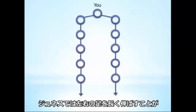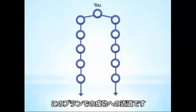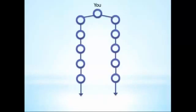It may seem complicated, but in reality it's very simple. All you need to do in Jeunesse's plan is build two lines straight down. If you can do that, you can be successful with this plan.